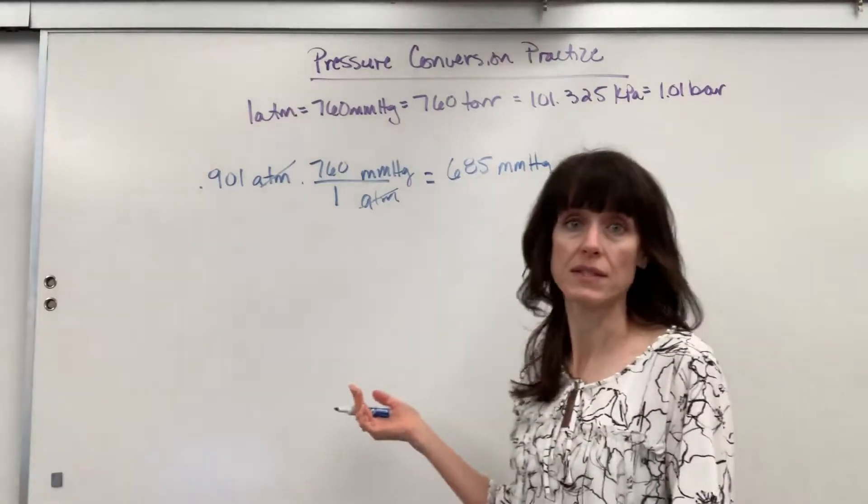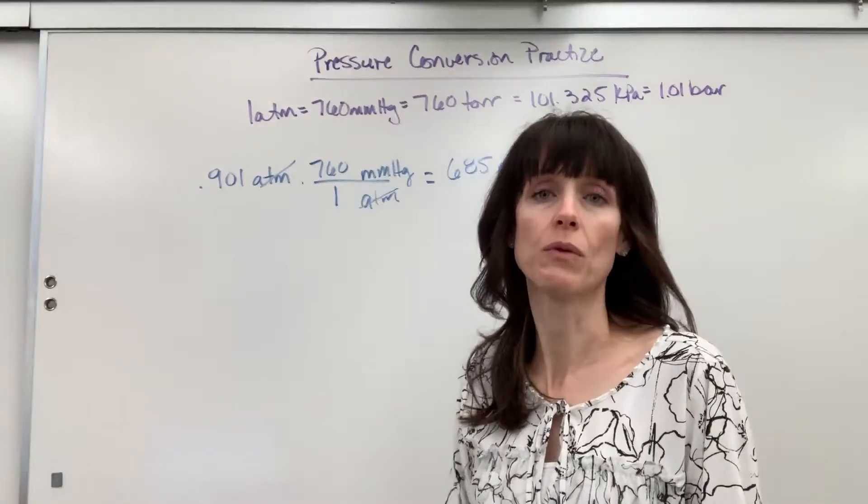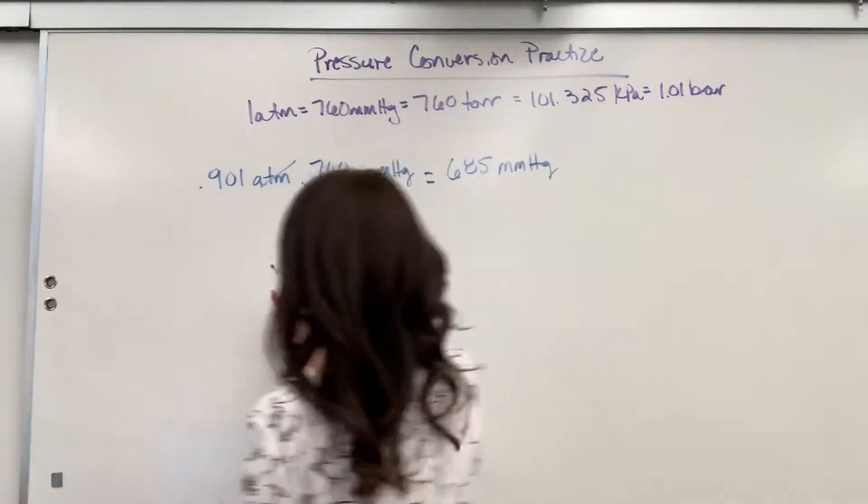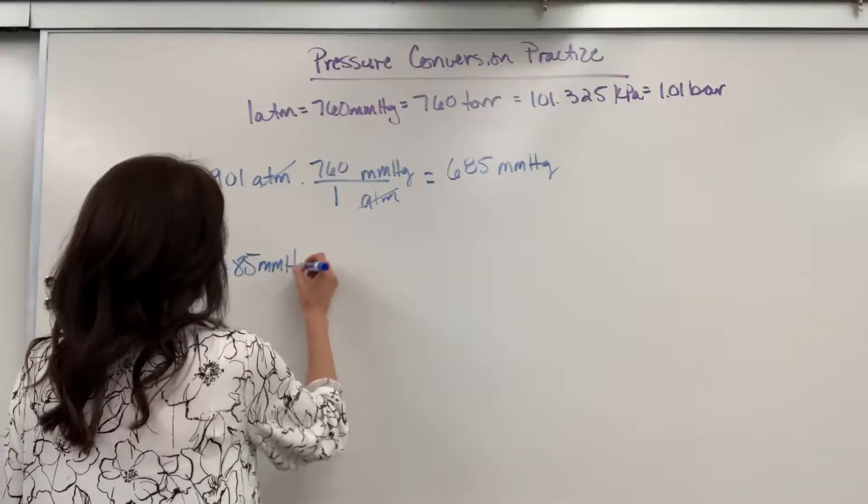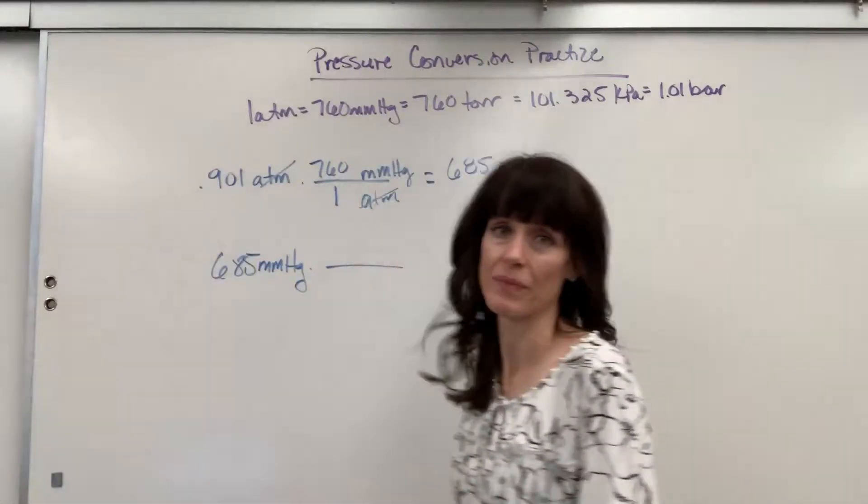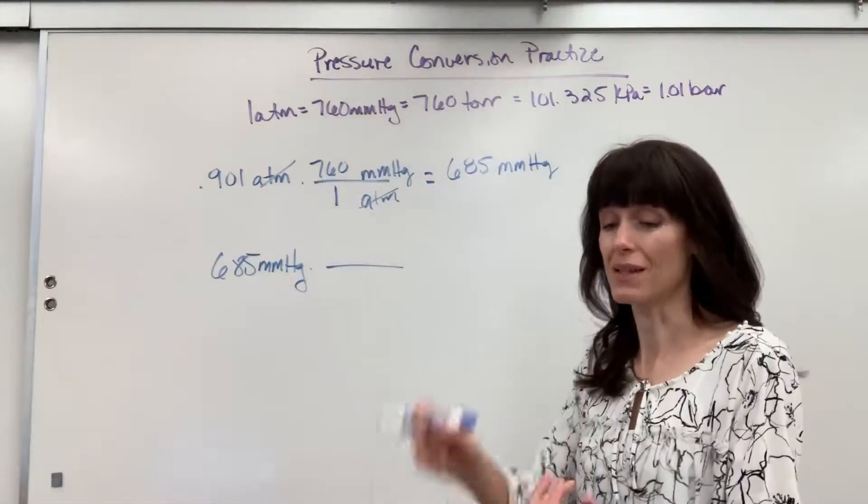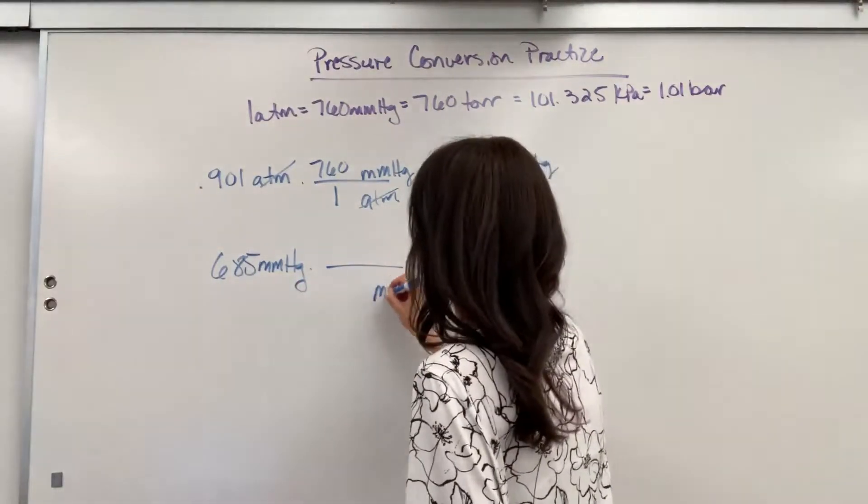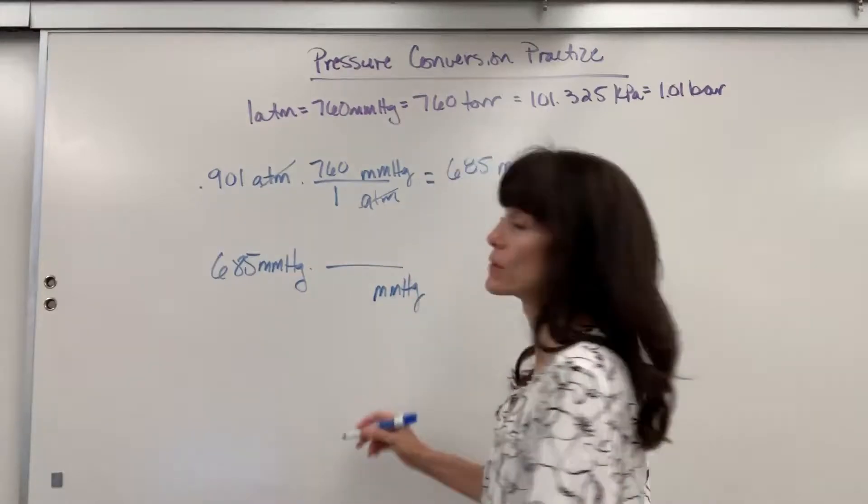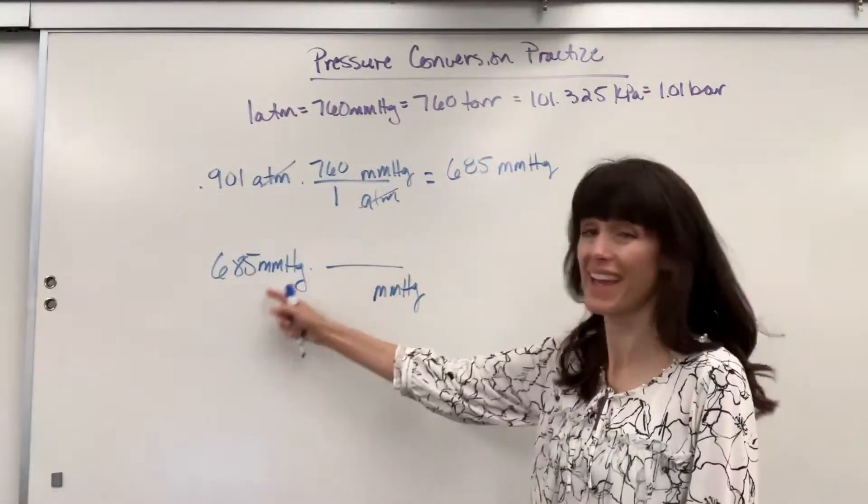Okay, now let's say that you have this 685 millimeters of mercury, and we want to convert that to torr. So 685 millimeters of mercury, and we want it in torr. Okay, I'm going to do the same thing. Get rid of a unit and end with unit. I want to get rid of millimeters of mercury so it goes in the denominator so that these cancel out.